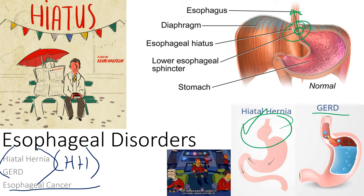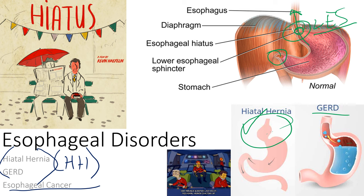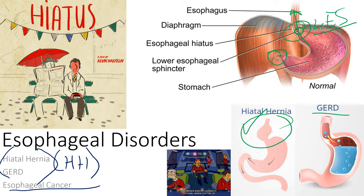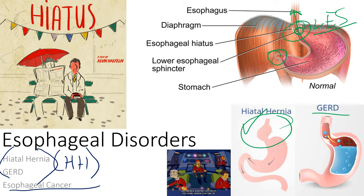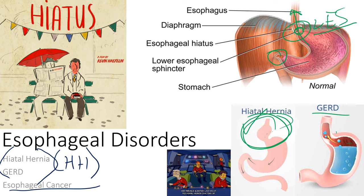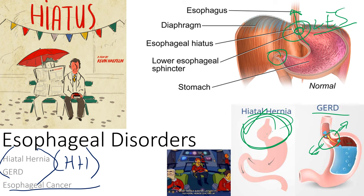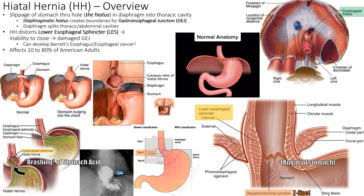As structures move up through the hiatus, the lower esophageal sphincter — the LES — can no longer close properly. A sphincter is a muscular opening that can close. Going from top to bottom: upper esophageal sphincter, lower esophageal sphincter, pyloric sphincter, then the ileocecal sphincter between the small and large intestine. That last one is important for Crohn's vs. ulcerative colitis.